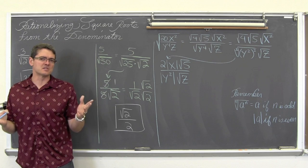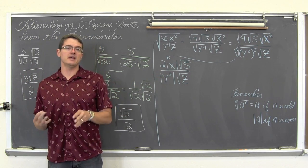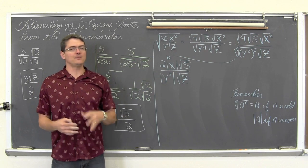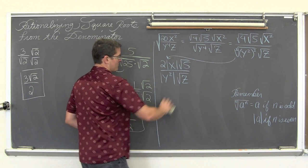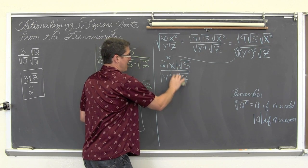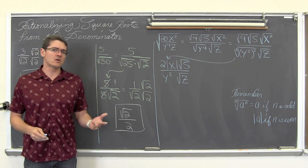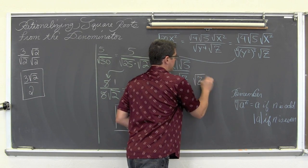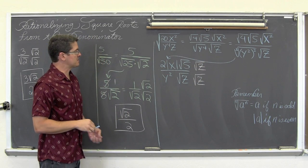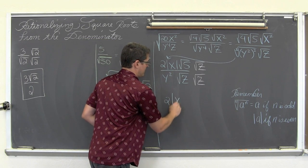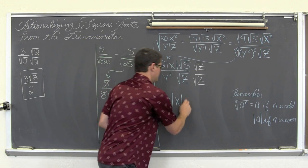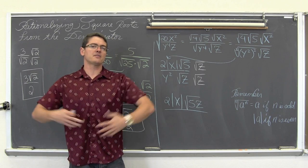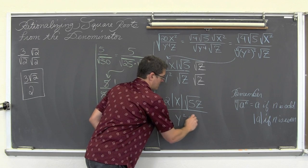The absolute value around y squared can actually be removed: absolute value prevents a factor from being negative, but y squared is always positive whether y is positive or negative. So the absolute value symbols around y squared are unnecessary. My simplified expression has a square root of z in the denominator, so I multiply top and bottom by square root of z. My final answer is 2 times the absolute value of x times the square root of 5z, all over y squared times z, since square root of z times square root of z equals z.